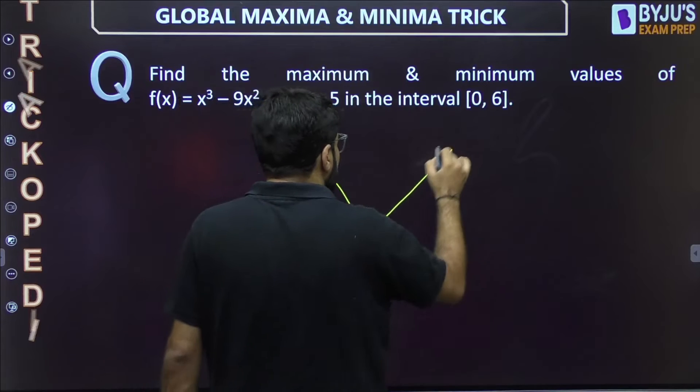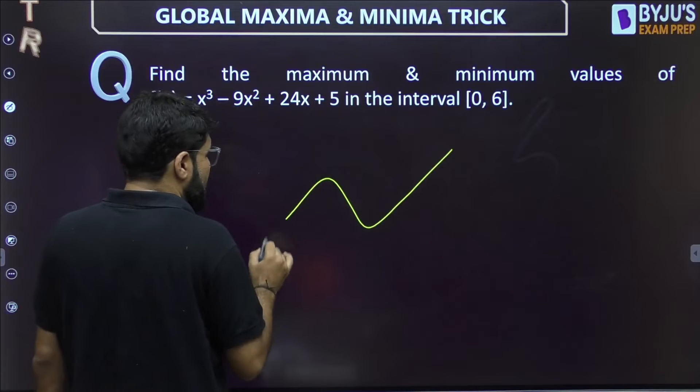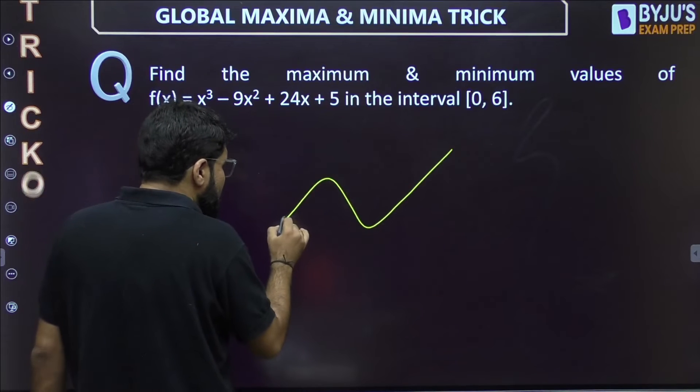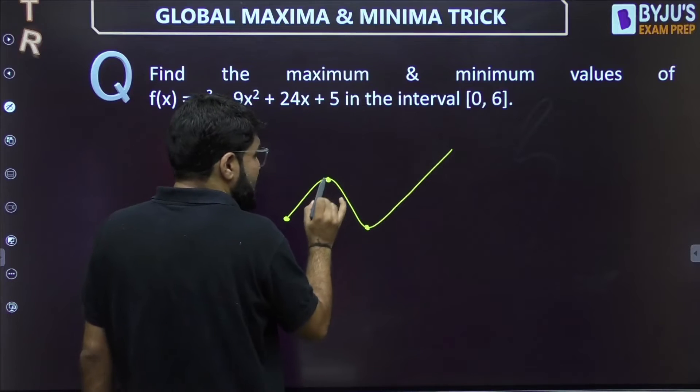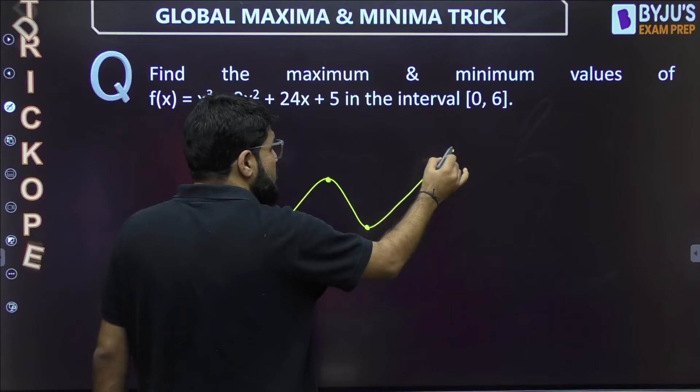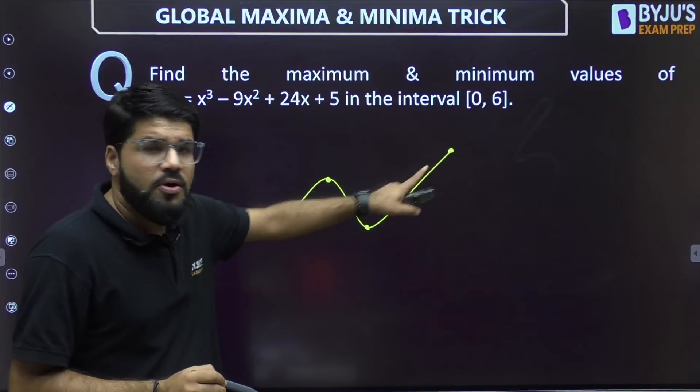Suppose this is the curve. Suppose this is the given curve. Now in this given curve, look at these points. This is the local maxima we all know, but this is the largest possible value—that is the global maxima. But this is the local minima.